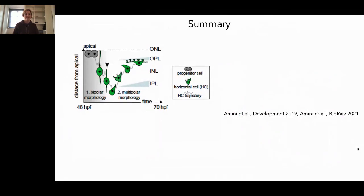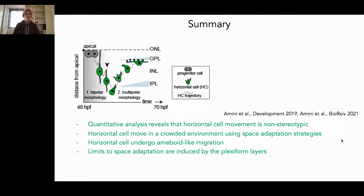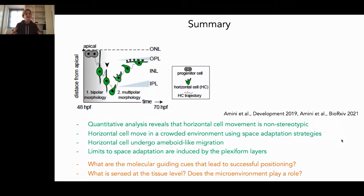In summary: quantitative analysis revealed that horizontal cell movement is non-stereotypic — these cells really move very individually. They move in a very crowded environment using space adaptation strategies and undergo amoeboid-like migration, which to our knowledge is one of the first examples of this migration type in the developing central nervous system. There are limits to space adaptation which can be induced by the plexiform layer. What we don't know yet is what the molecular guiding cues are that lead to successful positioning, and whether the tissue microenvironment could play a role to guide these cells that, even though doing it very individually, always reach the correct position at the end of their migration.